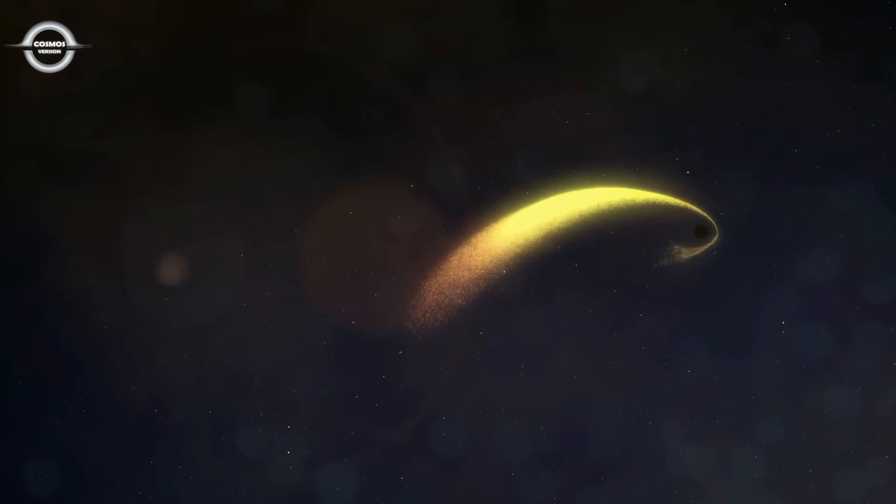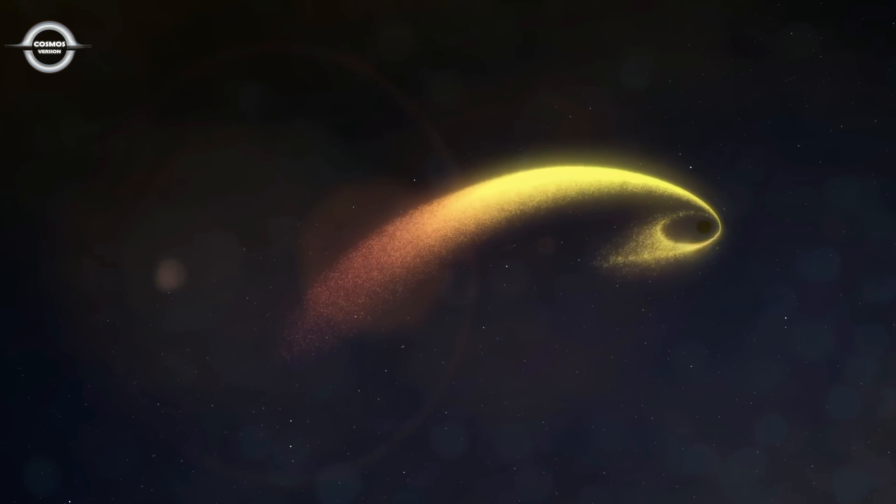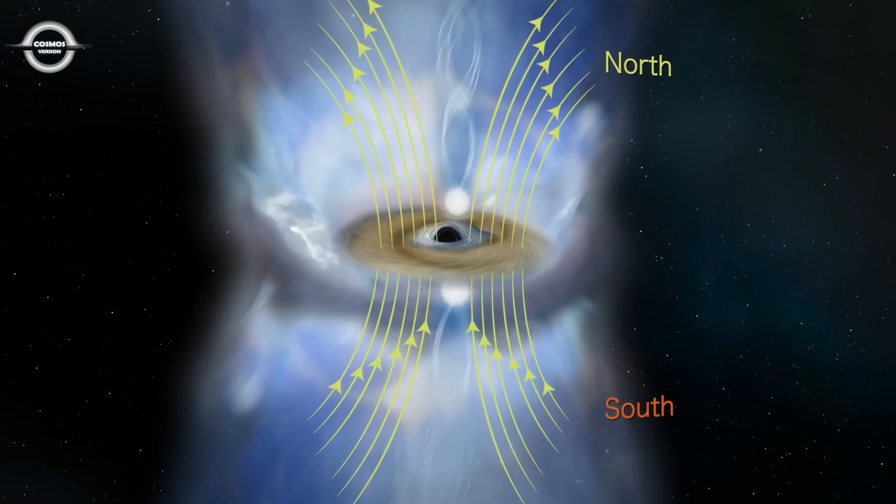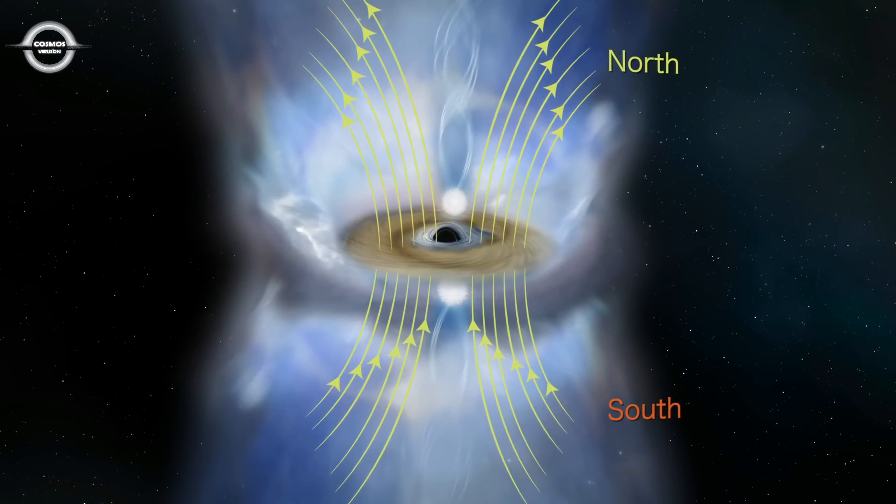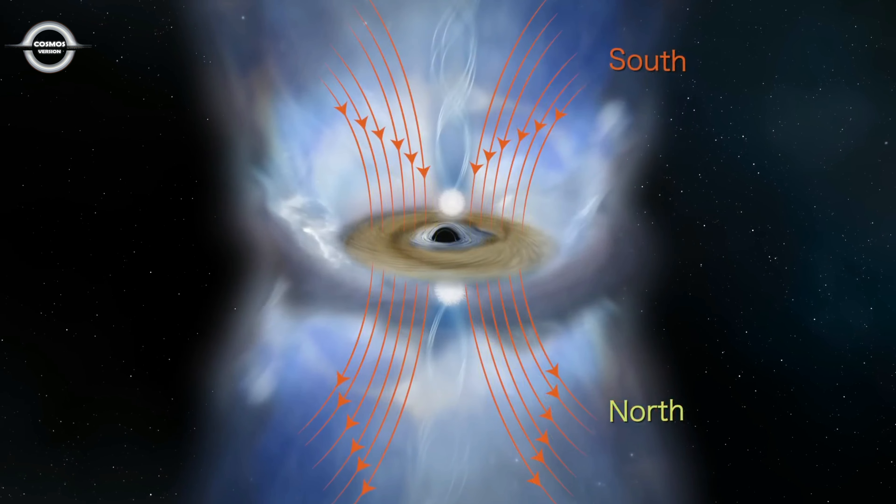A new study of observations spanning the entire event suggests a different cause. The trigger may have been a flip in the magnetic field in the disk of material around the black hole.